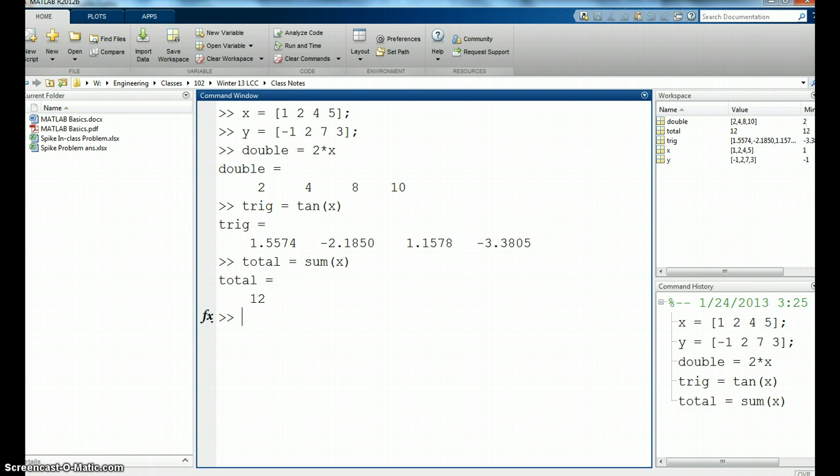There are other built-in functions. We've already seen one called length. So if I said number equals length x, it should tell me how many elements are in x, and there are four. So I could say, well, I've totaled everything up, there are four of them, I could take the average, 12 divided by 4.